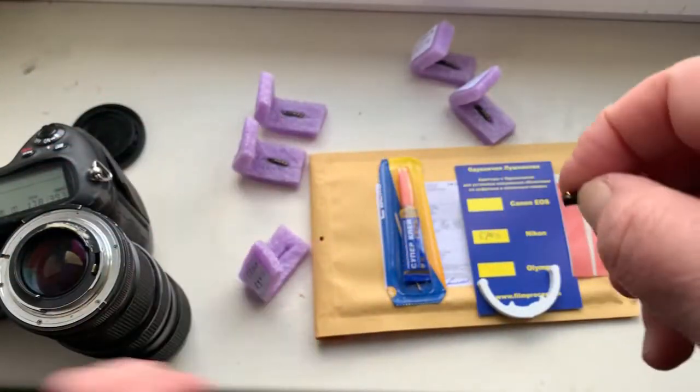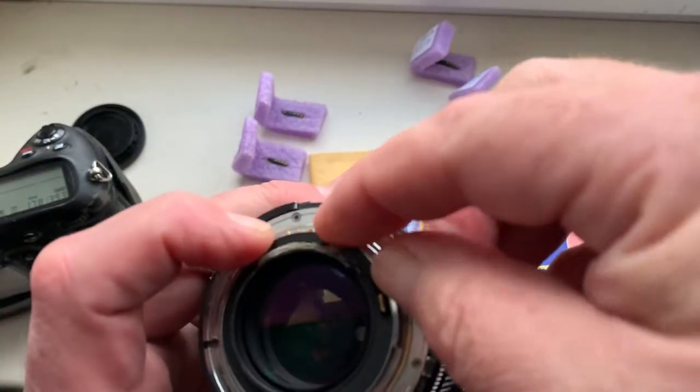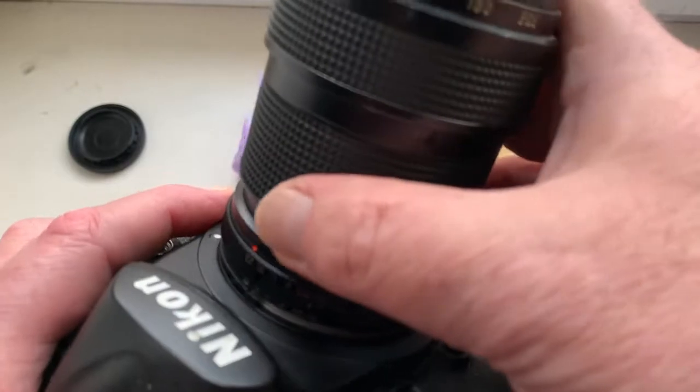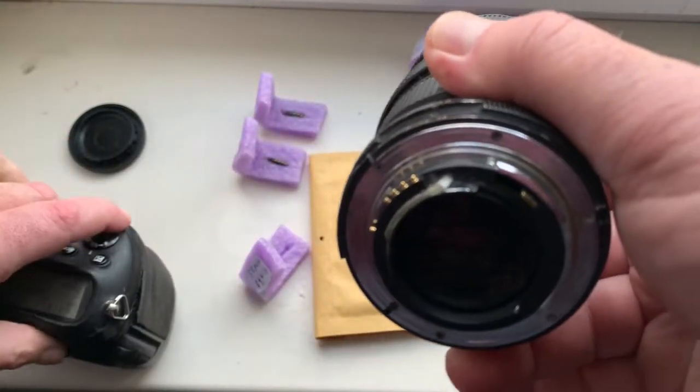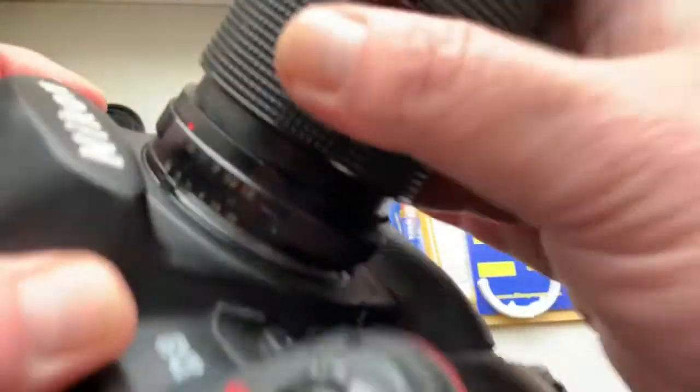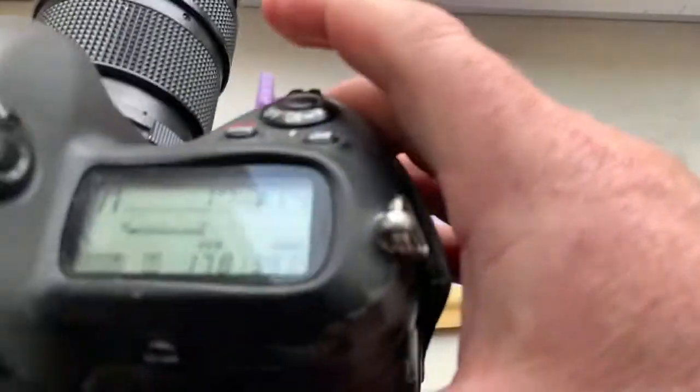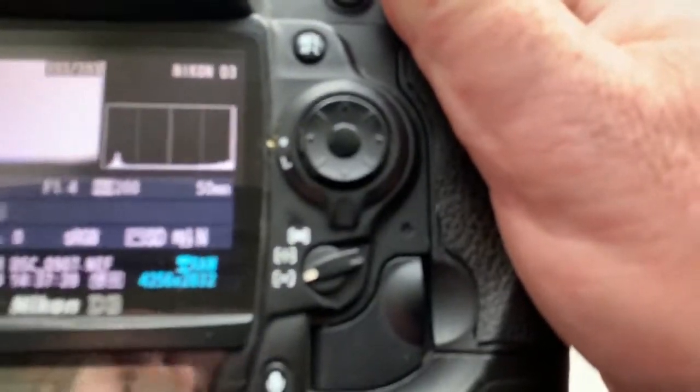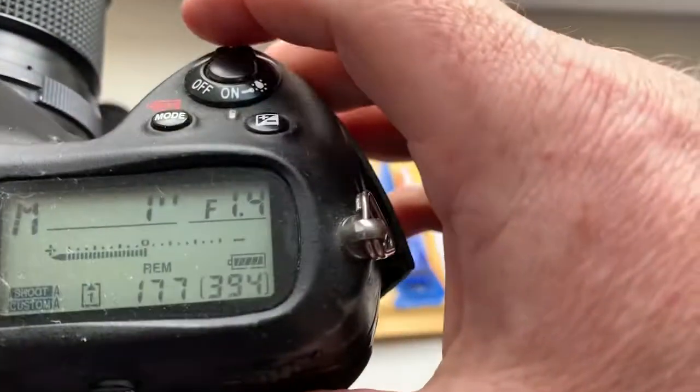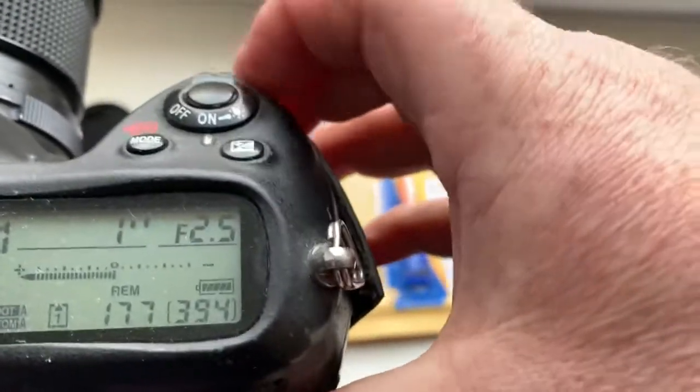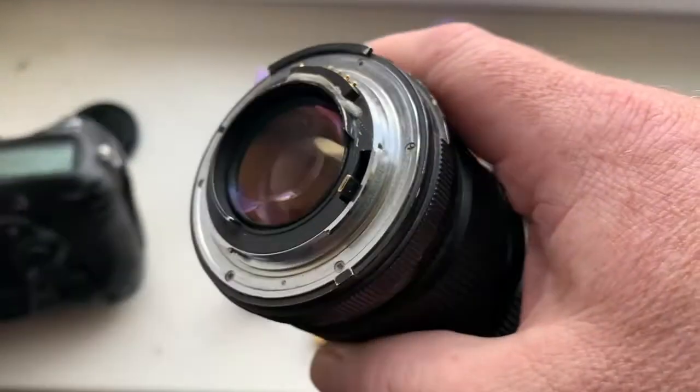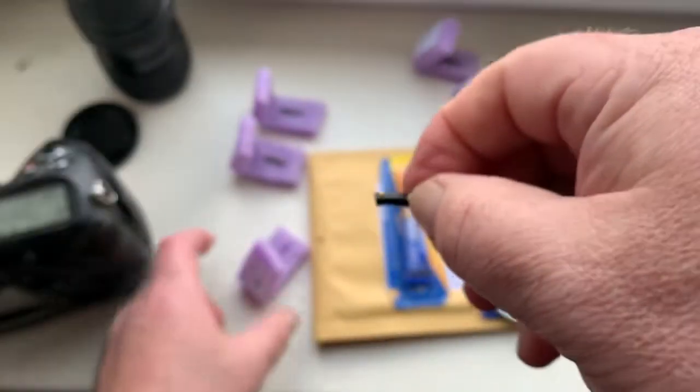Chip number three. Focal lens is 50mm, aperture range from 1.4 to 16. The chip number three.